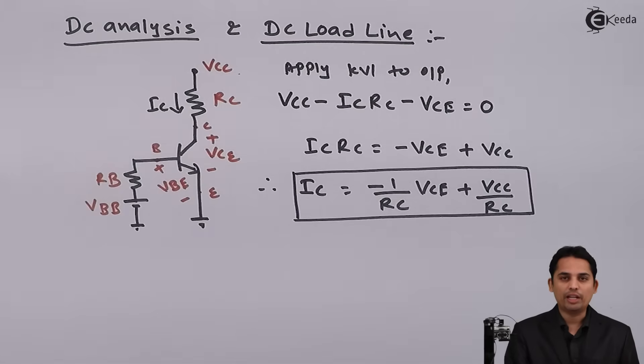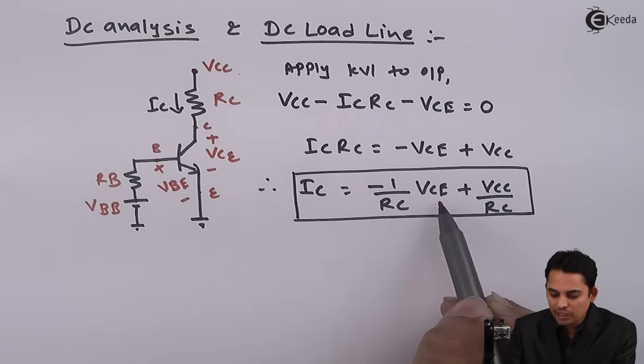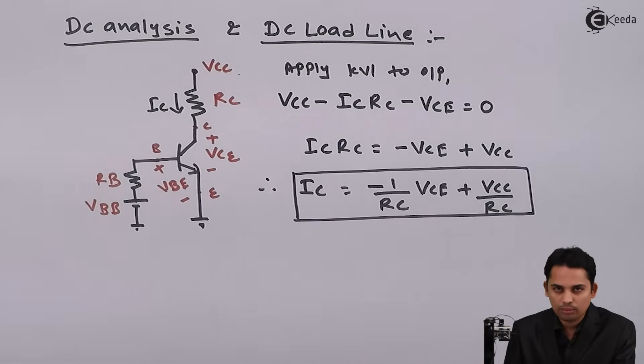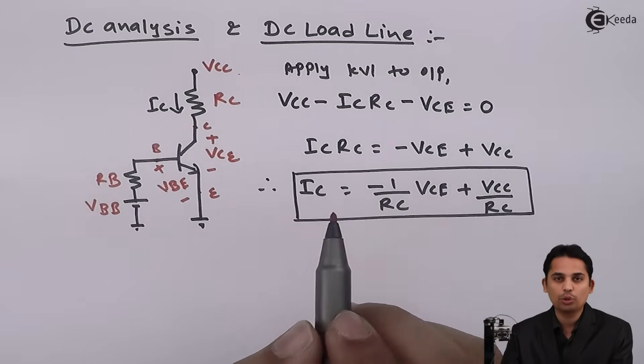So we have got equation of IC. In order to draw a line, we require minimum 2 points. How to get these 2 points? What we can do is: to get value of IC, I can put VCE equal to 0, and to get value of VCE, we can put IC equal to 0.